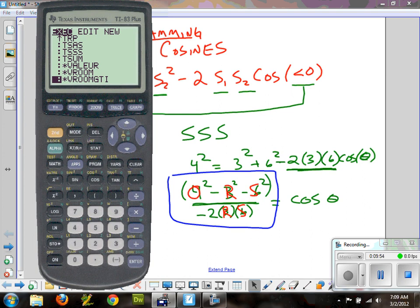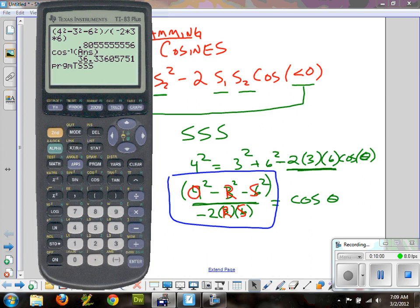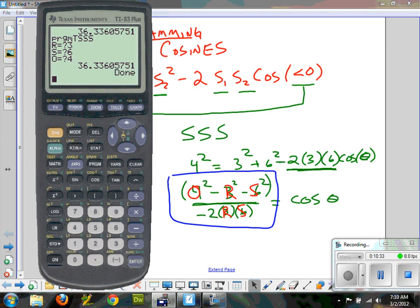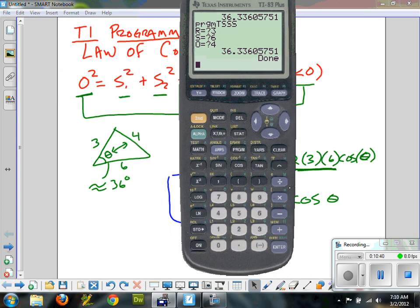So I'm going to hit the program button. I'm going to go find the one I made. It was called TSS for me. You might have labeled it SSS. I'm going to select it. Notice it doesn't run it yet because right now the cursor is blinking right after it. We've brought it to the screen, but we haven't told it to run it. I'm going to hit enter. Now I'm actually going to run the program. R is one of the non-opposite sides. So I'm going to do three. Enter. I'm going to do six. And then my opposite was the four. So I'm going to put the four in, hit enter, and sure enough, we get the exact same answer. And it's basically 36.3 degrees if I round it off.